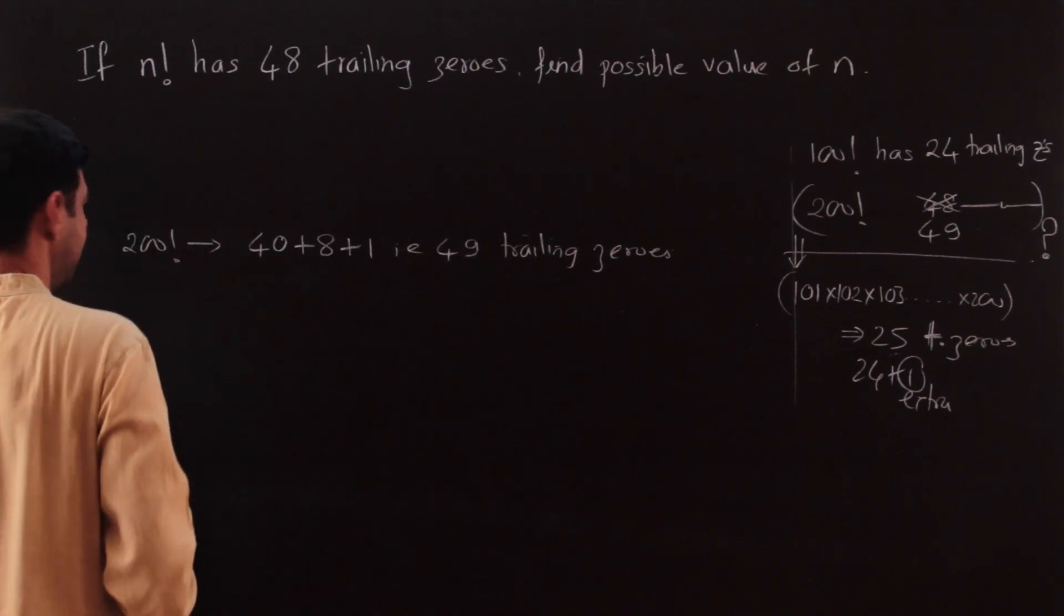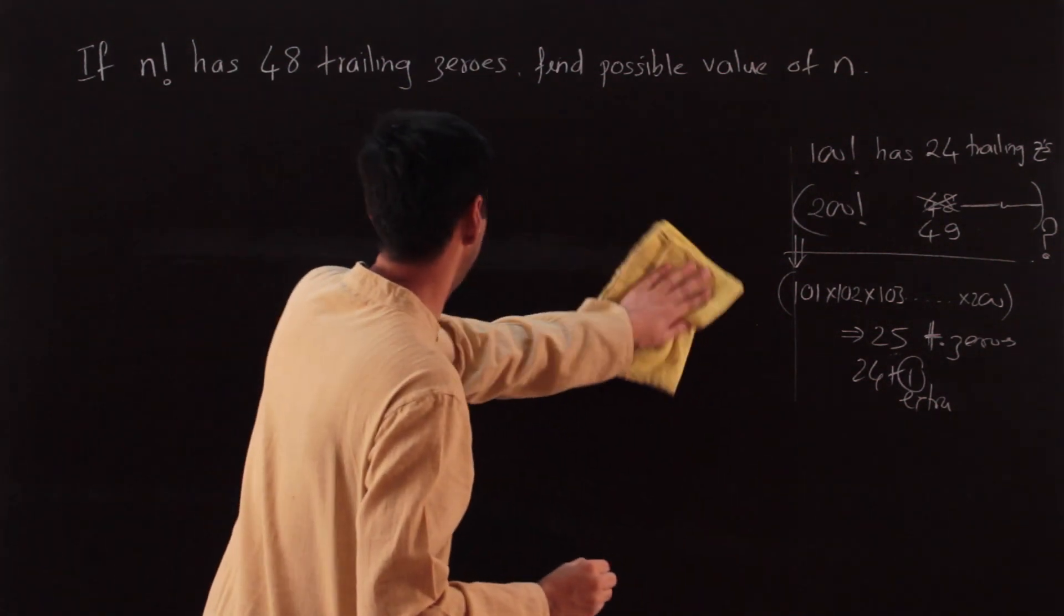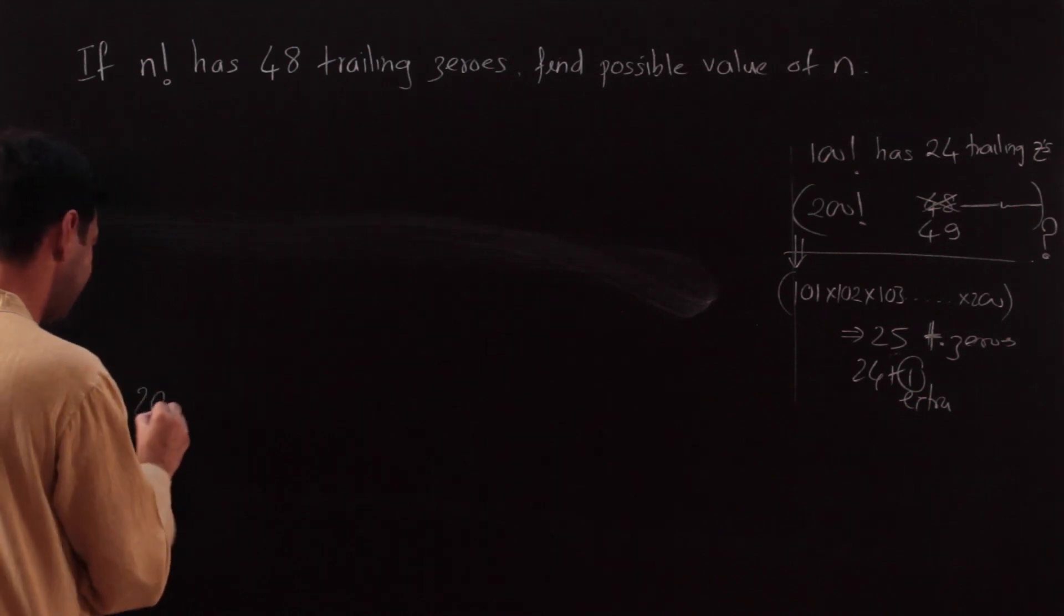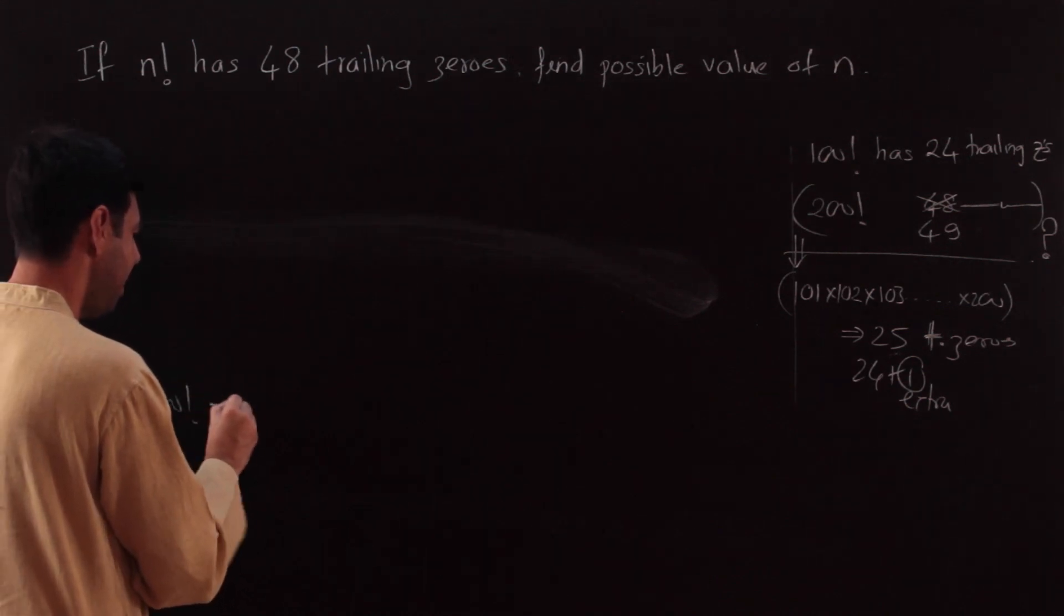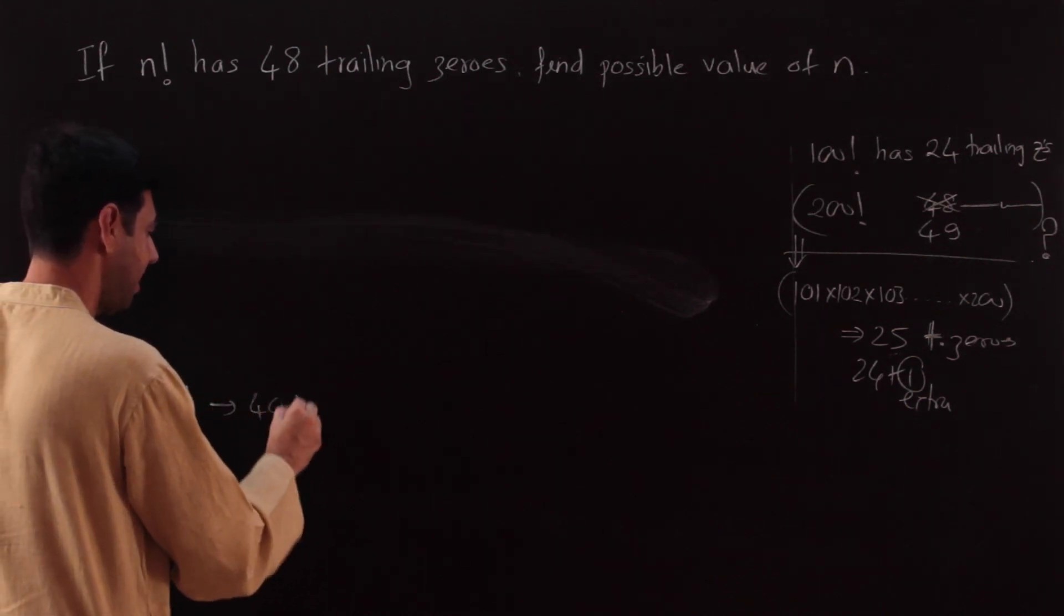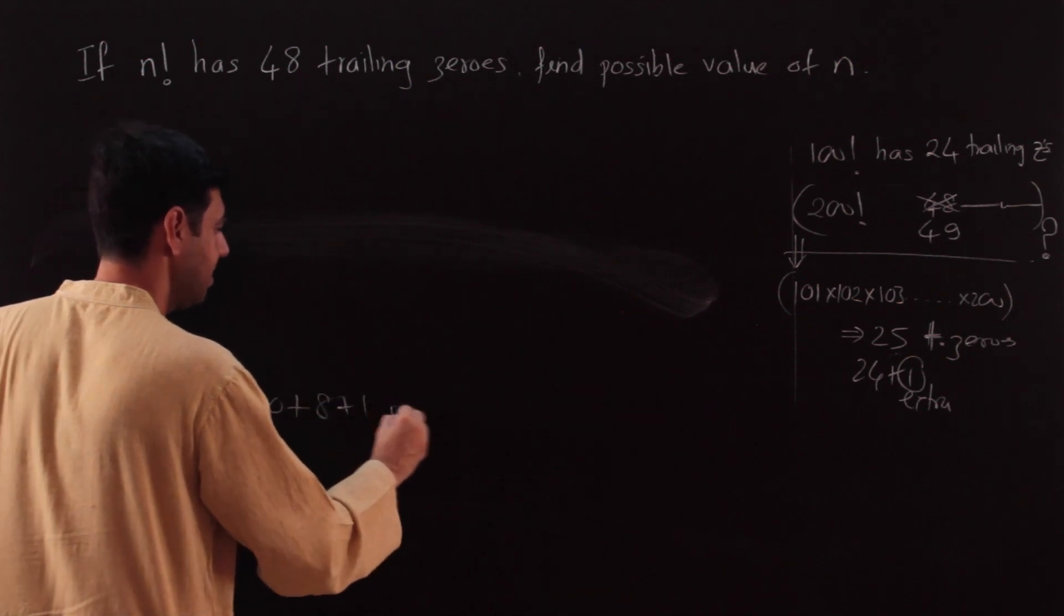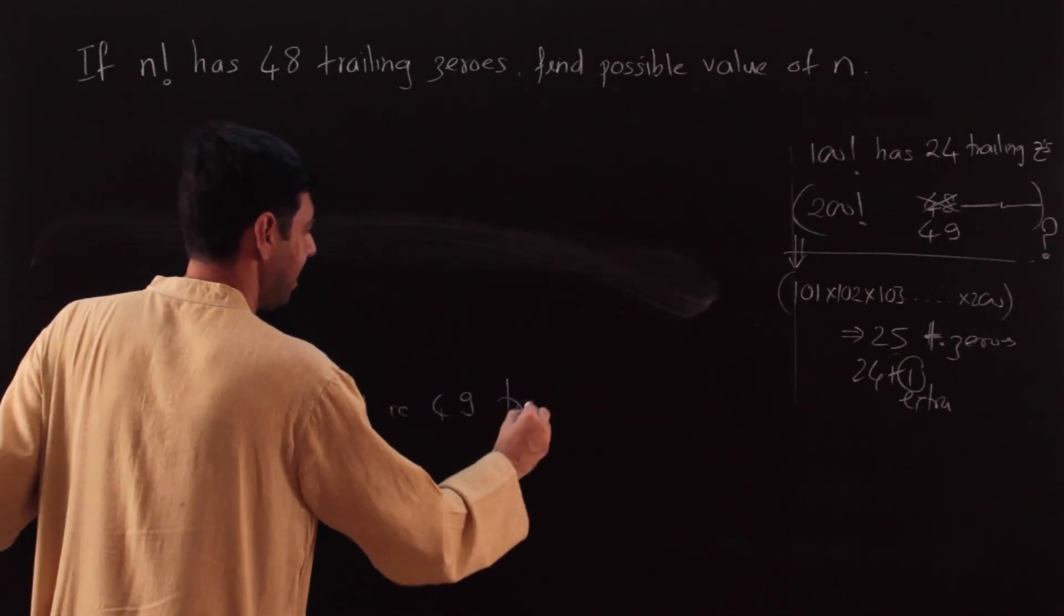I should have written this a little lower so that I can go the reverse way. So let me just do that again. 200 factorial we found had 40 and 8 and 1, that is 49 trailing zeros.